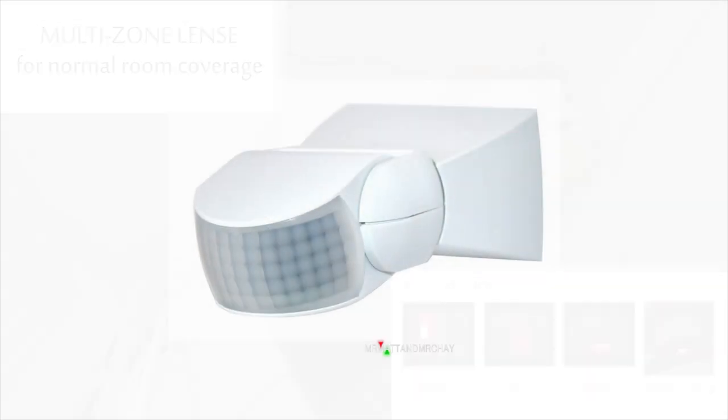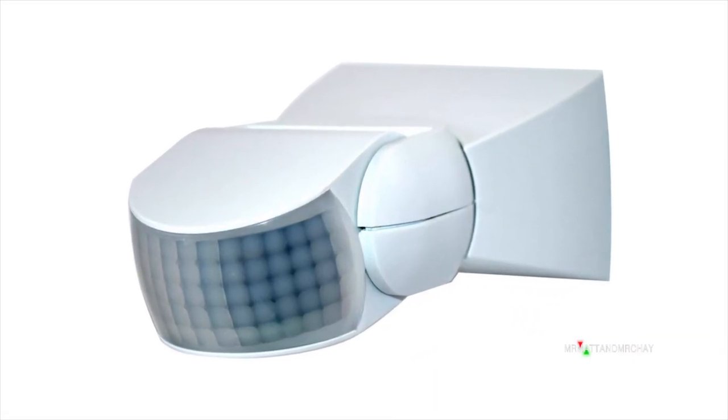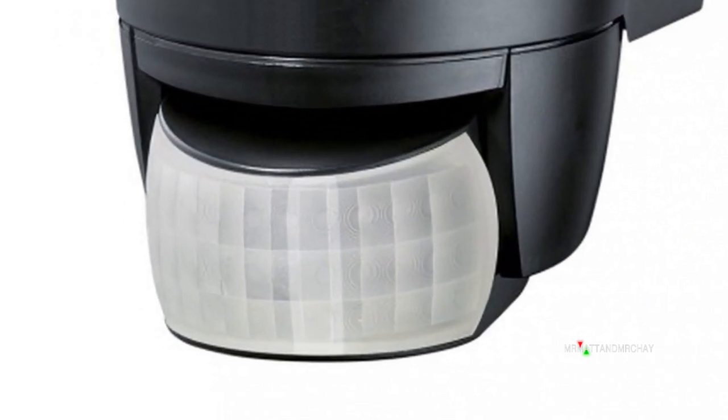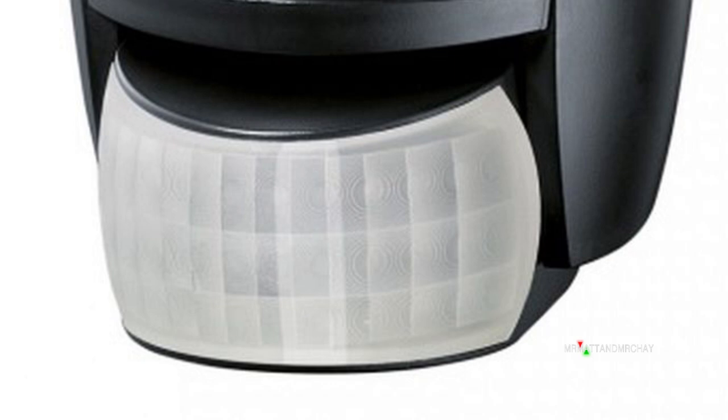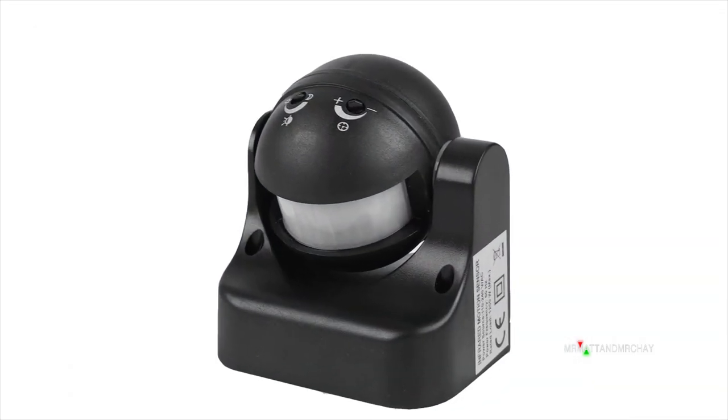These PIR detectors used for outside lighting just have segments all over the place. The size of each segment limits the range, but it has far more detection zones than a conventional indoor PIR. These are angry looking devices. This one looks a lot more friendly though.